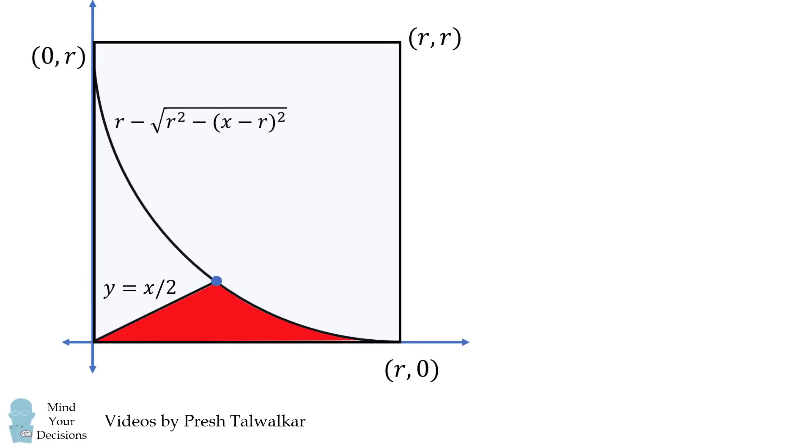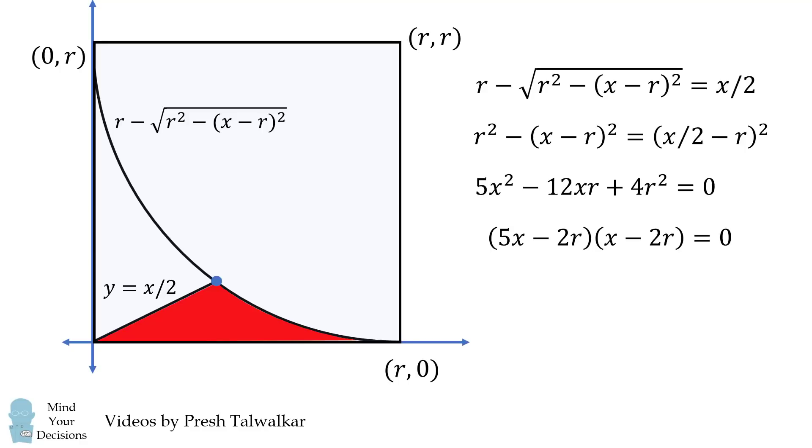Let's find the coordinates of this point. In order to do that, we'll solve for the intersection of the semicircle and the line Y is equal to X over 2. We'll do some algebra and we'll end up with the quadratic equation. We can factor this equation and we get two solutions. But we want the solution where X is between 0 and R. So the solution we want is X is equal to 2R over 5. Since Y is equal to X over 2, this means Y is equal to R over 5. And we figured out that this coordinate is 2R over 5 comma R over 5.